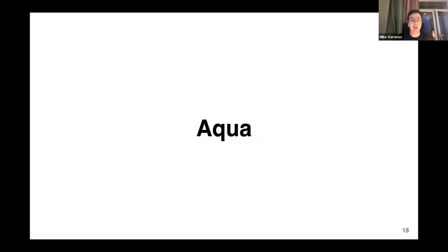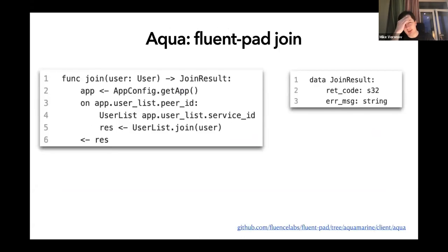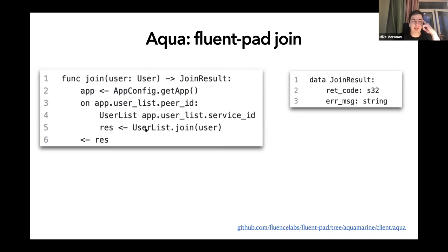Let's talk a little bit about Aqua, just to have some context of how it looks. I think it's better to review several examples. We have a more or less complex example called Fluid Path — it's like some form of messaging app, and you can find it by this link. Here you can see an example of an Aqua script — that's our language. We don't have a syntax highlighting scheme for this language yet, so it's just plain text.